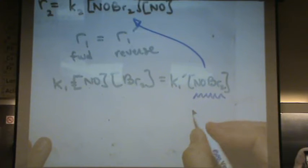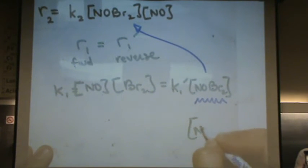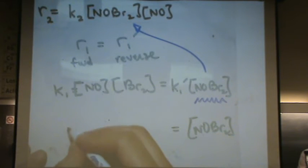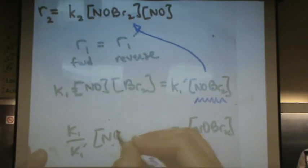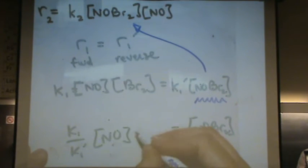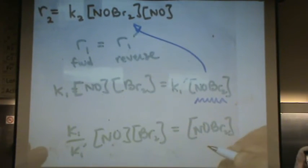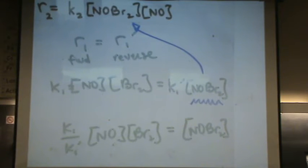Let me do that so you can see what that would look like. Solve for NOBr2, aka solve for my intermediate. That's K1 over K1 prime times NO times Br2. I've just solved for my intermediate.